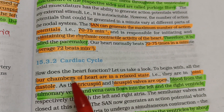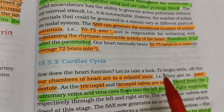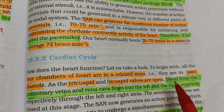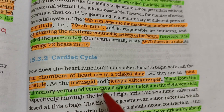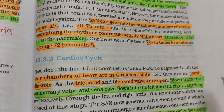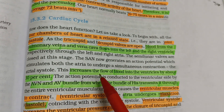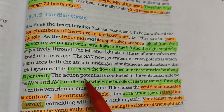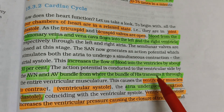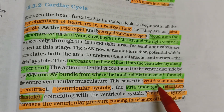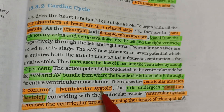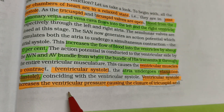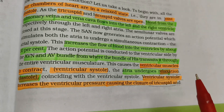In the cardiac cycle, all four chambers of the heart are in a relaxed state called joint diastole. The tricuspid and bicuspid valves are open, and blood from the pulmonary veins and vena cava flows into the left and right ventricles. Atrial contraction increases blood flow into the ventricles by about 30%. The AVN and AV bundle then transmit the impulse throughout the ventricular muscles to initiate ventricular systole, while the atria undergo relaxation (diastole).